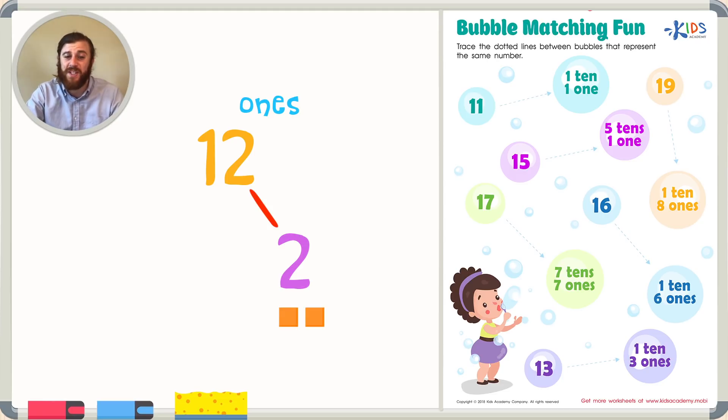If we look to the tens place, we'll see the number 1. Although this 1 doesn't just represent anyone, it represents one 10. This 1 really is 10, or 1 long, which is made up of 10 individual cubes.